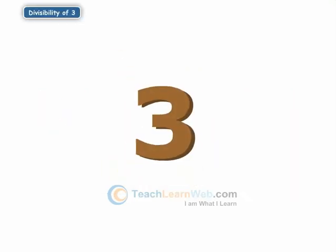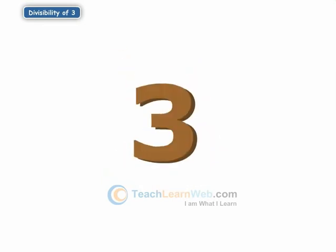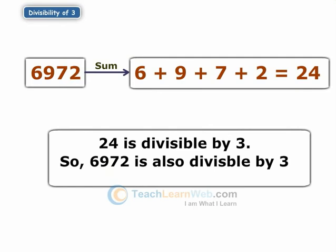Now comes the turn of 3. How do we check for the divisibility of 3? If the sum of the digits is a multiple of 3, then the number is divisible by 3.